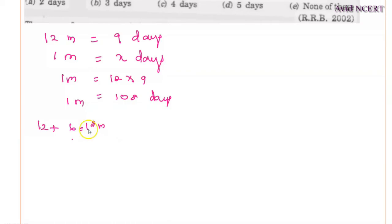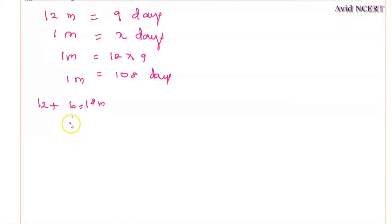We have to find how many days they will take. Same logic applies here. 1 man takes 108 days to complete the work, so we have to find for 18 men, which equals x.